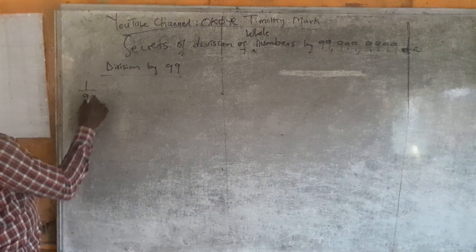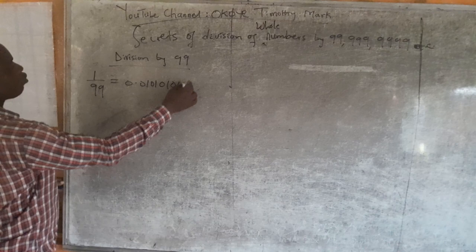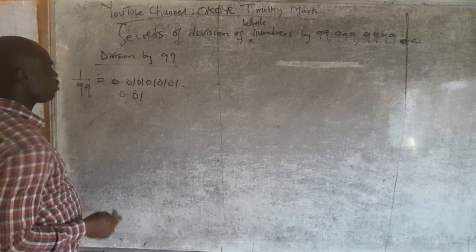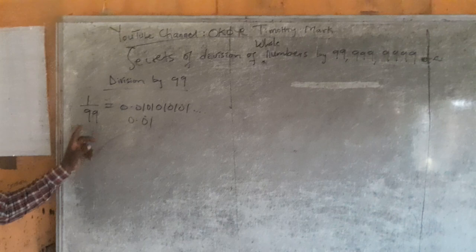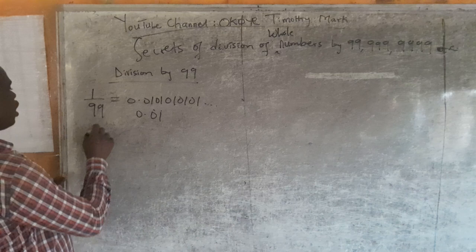For instance, 1 over 99 is 0.01, 01, 01, 01, and so on — written as 0.01 with the digits repeating, showing that they repeat indefinitely. Why the two decimal places? Because 99 has two digits.